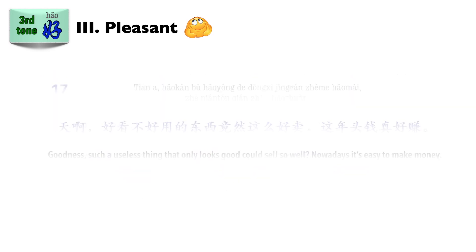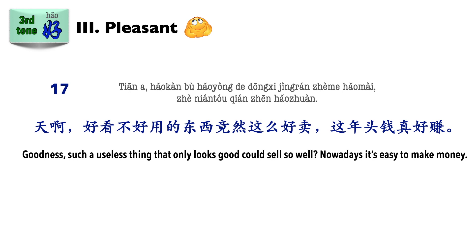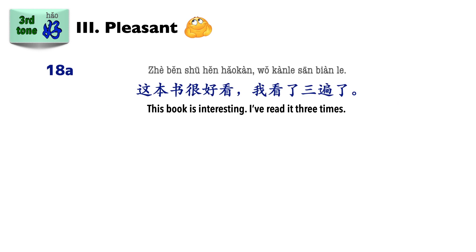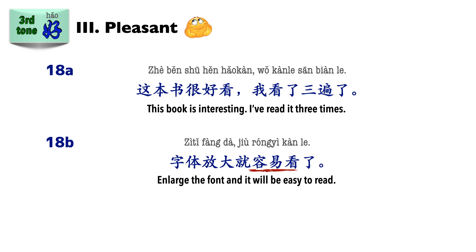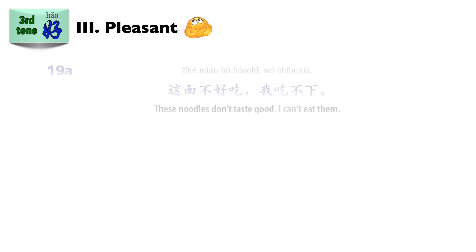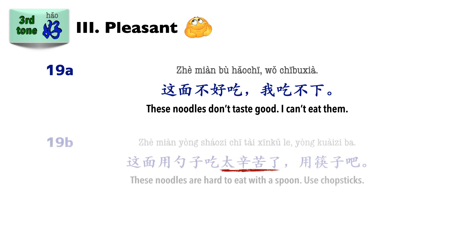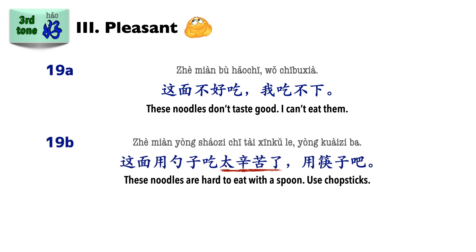Take a look at the following: 好看不好用的东西竟然这么好卖! 这年头钱真好赚! If there is possibility of being unclear, we could always use other ways of expression. For example using 好看 and 好吃: 这本书很好看，我看了三遍了 (pleasant) vs. 字体放大就容易看了 (easy). 这面不好吃，我吃不下 (pleasant) vs. 这面用勺子吃太辛苦了，用筷子吧 (easy).